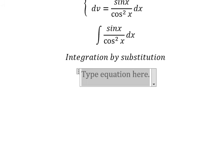So I will put u equals to cosine x. After that, we need to do first derivative for both sides. And we have du equals to negative sine x dx.